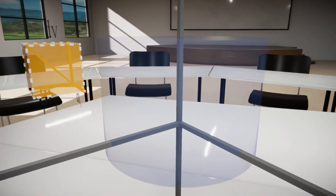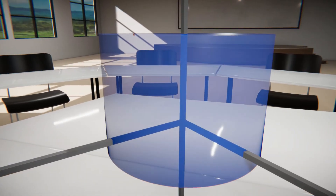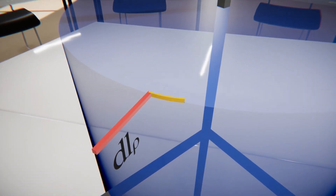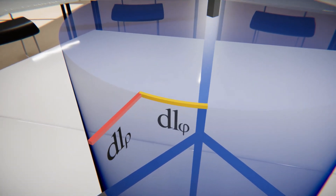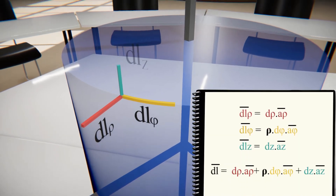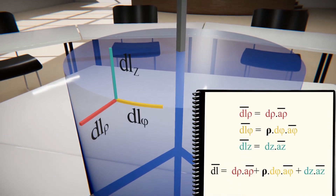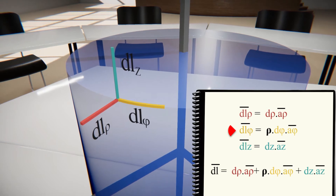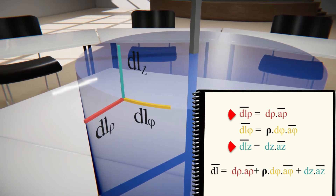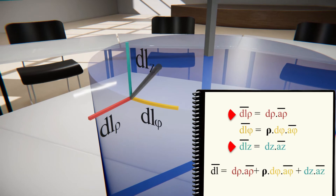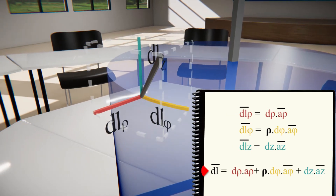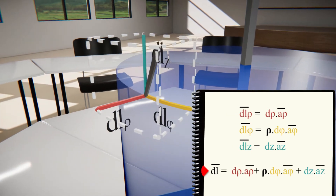In the cylindrical coordinate system, the differential lengths extend in the direction of growth of the variables rho, phi, and z. Consequently, the differential length dl_phi depends on the variable rho, while the differential lengths dl_rho and dl_z are independent of rho. The differential element of length dl is the vector sum of these lengths.